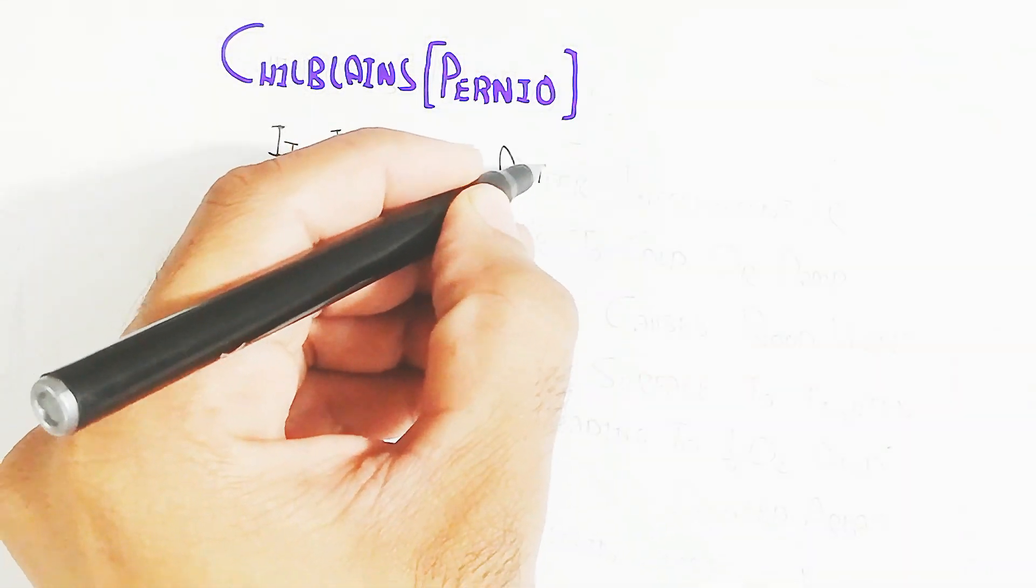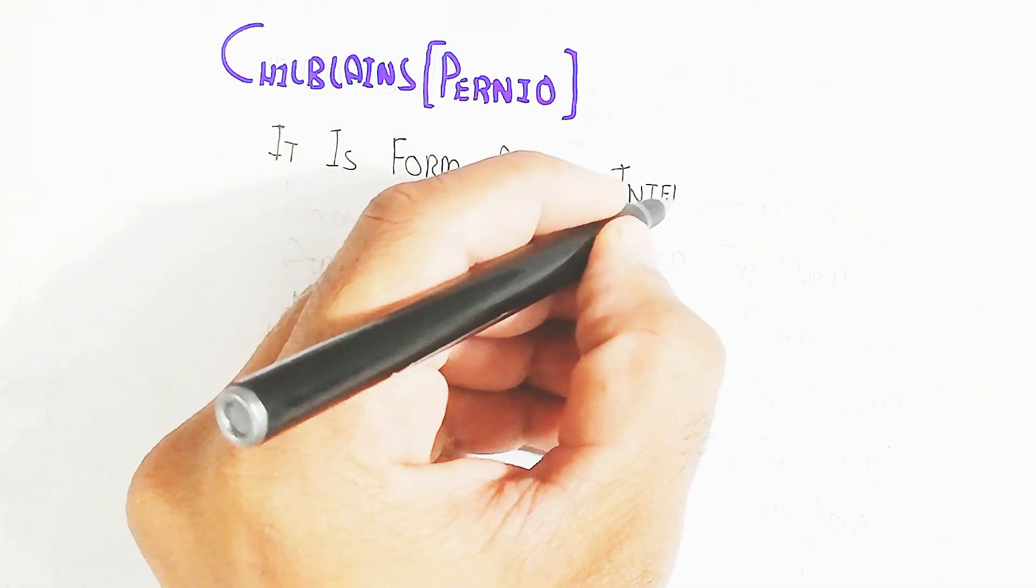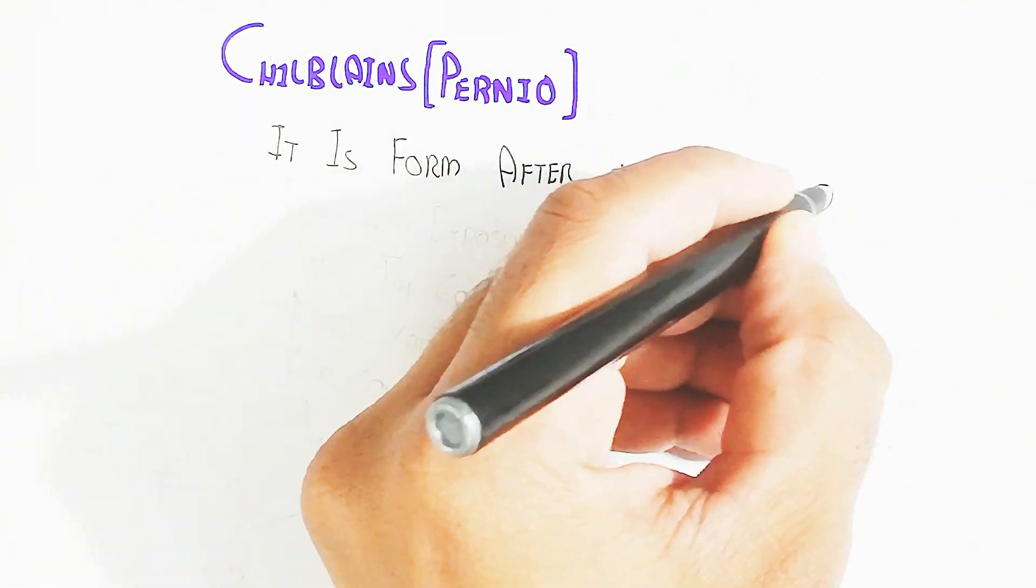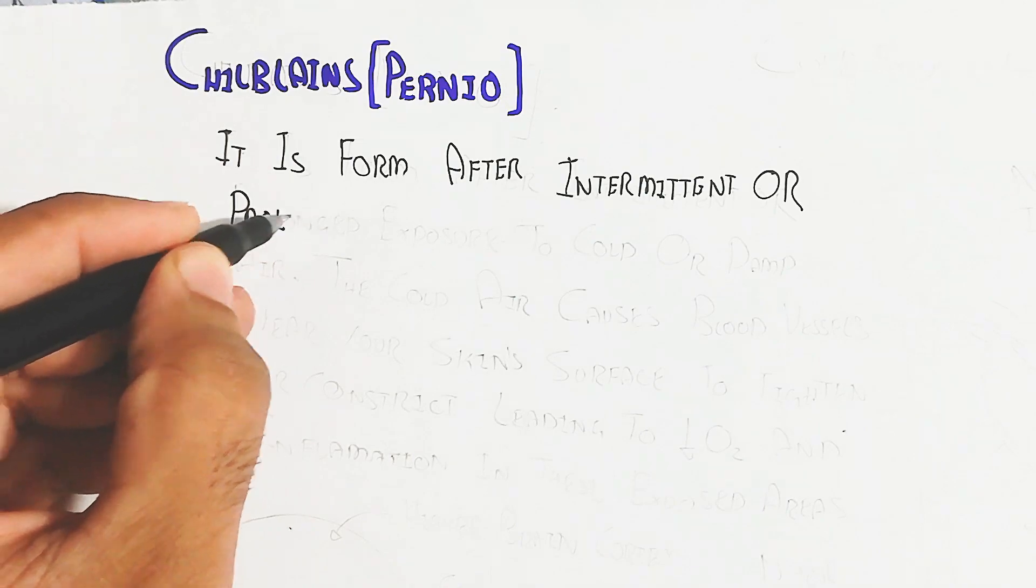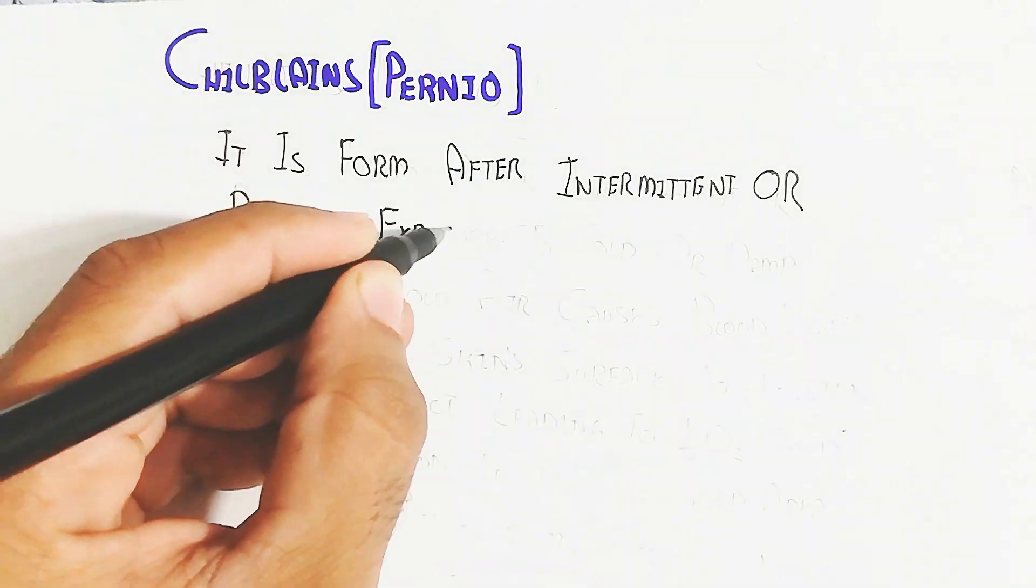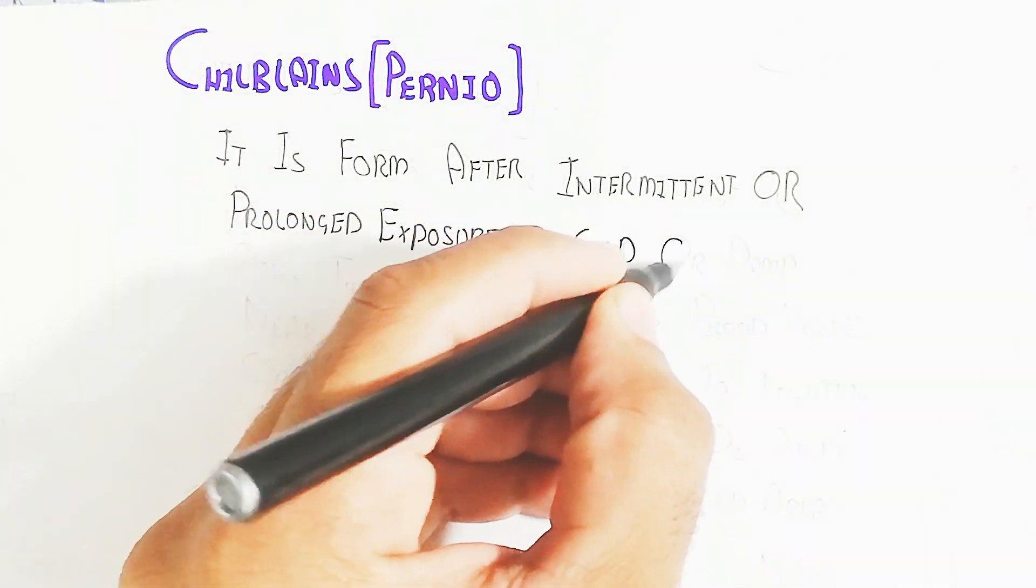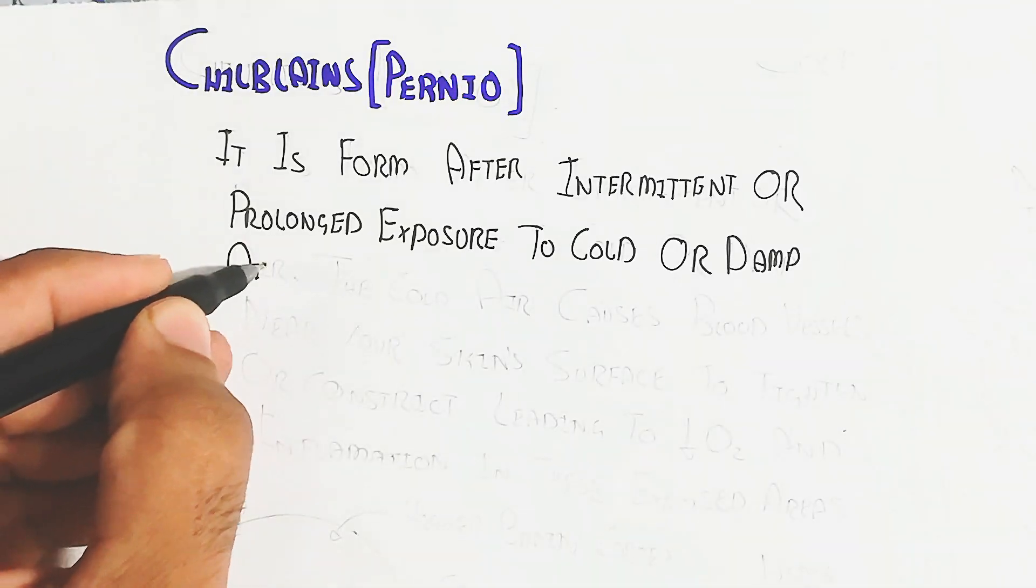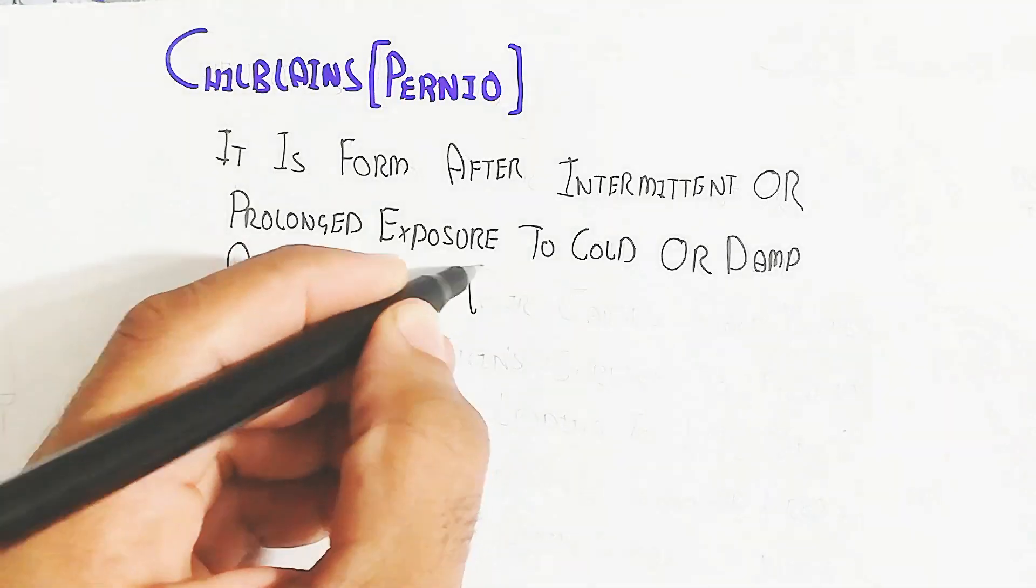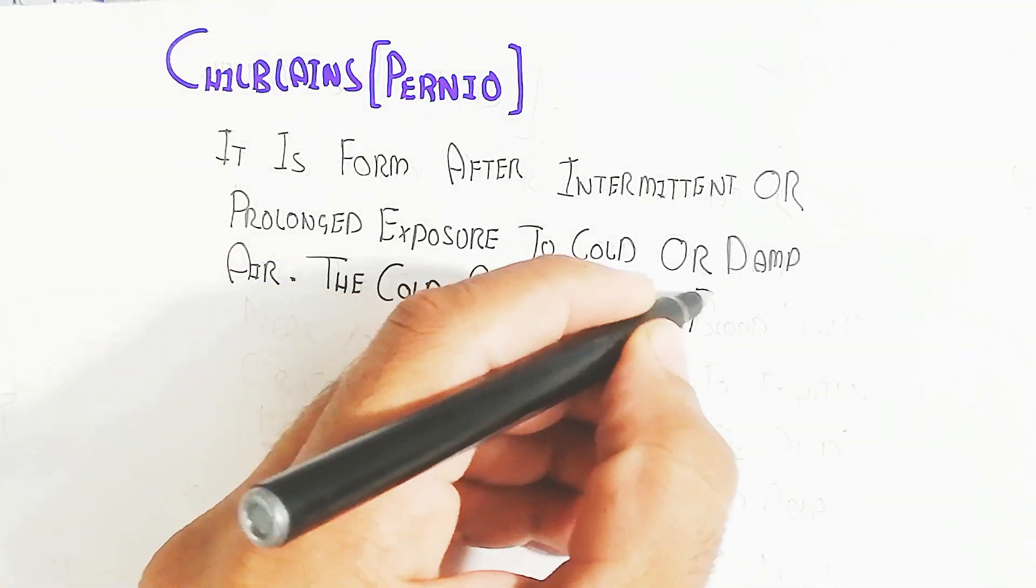So let's begin to understand. It is formed after intermittent or prolonged exposure to cold or damp air. The cold air causes blood vessels near your skin surface to tighten or constrict.